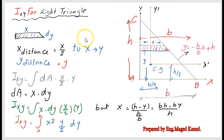We are going to talk about the product moment of inertia for the right angle triangle by using a horizontal strip — the same procedure which we have used for the determination of the moment of inertia about the x-x axis.